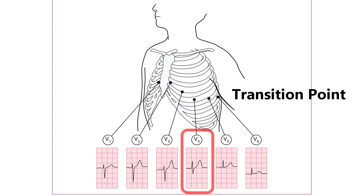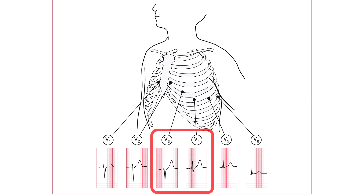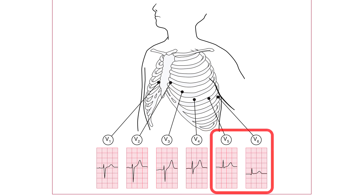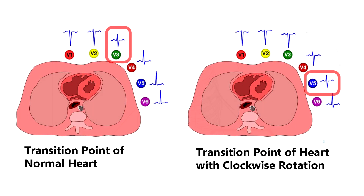If the right ventricle is enlarged and occupies more of the precordium than is normal, the transition point will move from its normal position at leads V3-V4 to leads V4, V5, or sometimes V5-V6. Seen from below, the heart can be thought of as having rotated in a clockwise direction. Clockwise rotation on the ECG is characteristic of chronic lung disease.